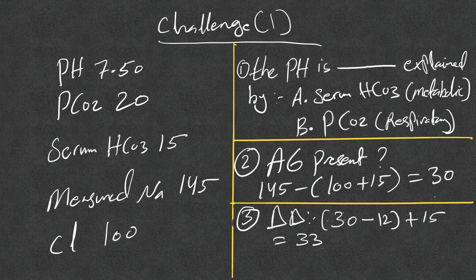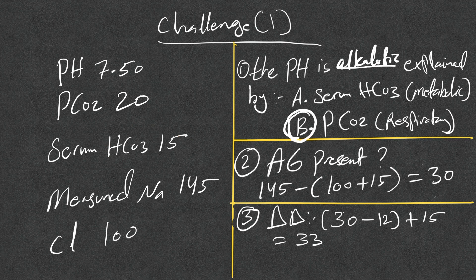The first step: is the pH acidotic or alkalotic? This pH is alkalotic. What explains it — the serum bicarb or the pCO2? The pCO2 is 20 and the serum bicarb is 15, so this is explained by the pCO2. This is respiratory — primary respiratory alkalosis. The pH is alkalotic and explained by low pCO2.